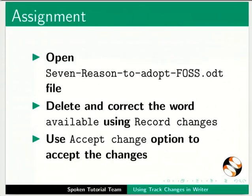As an assignment, open the '7 reasons to adopt FOSS.odt' file, delete and correct the word 'available' using Record Changes, and use the Accept Change option to accept the changes.